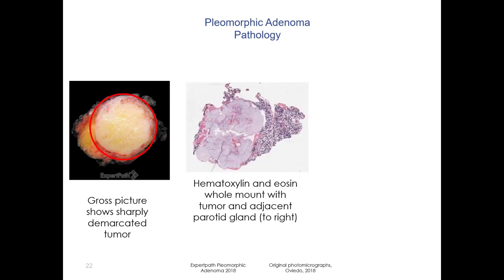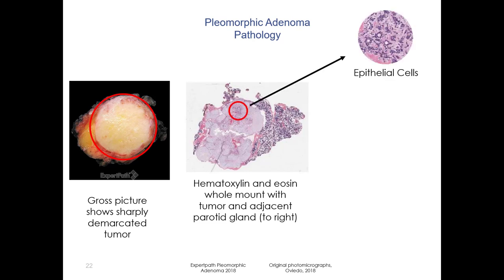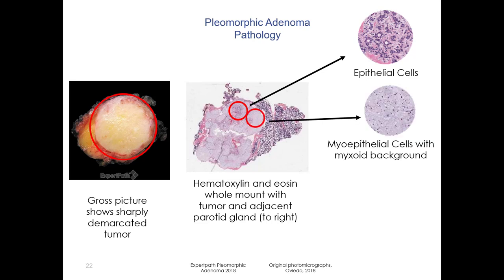Let's take a look at the pathology. Here we have a gross picture which shows a very sharply demarcated pleomorphic adenoma. Here is the whole mount — you can see there is some normal parotid on the right. At high power, the tumor is composed of epithelial cells, myoepithelial cells with a myxoid background, and chondroid cells.